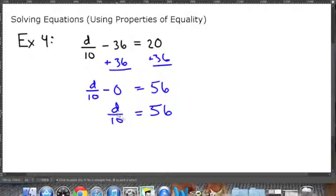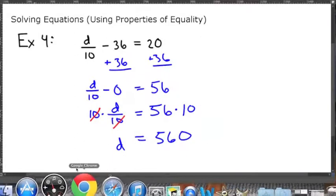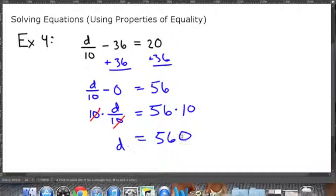Now, to undo this division, we're going to multiply by 10 to both sides. So we'll basically cancel each other out, and it will just be d divided by 1, which is d. And 56 times 10 is 560. So d in this equation is 560.